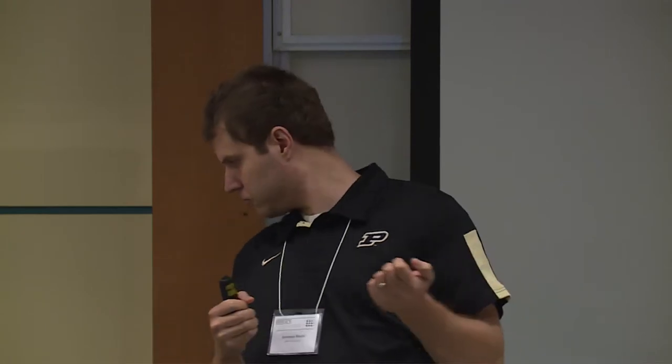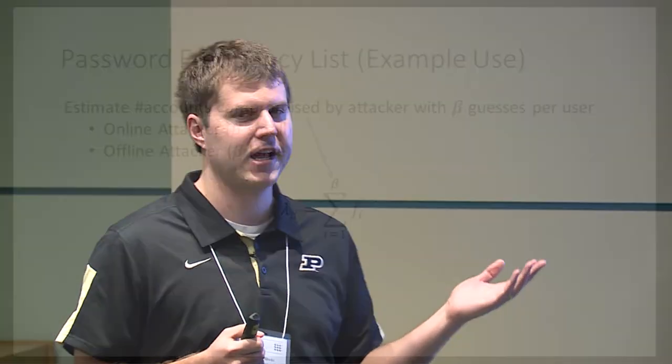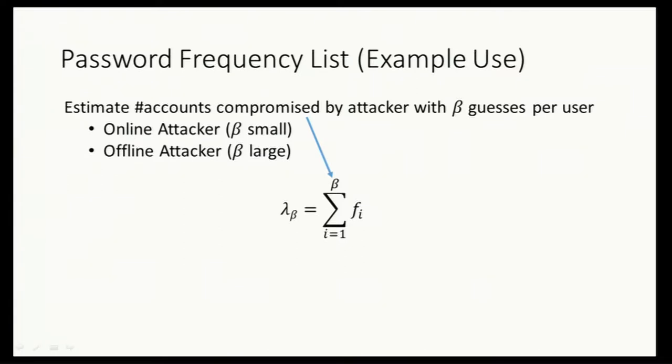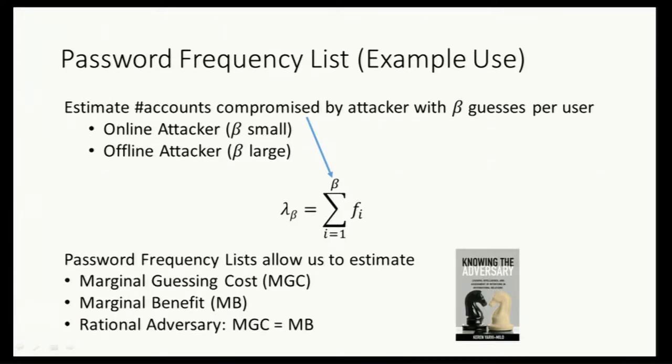Why would we want a password frequency list? A password frequency list can be tremendously valuable for security researchers. For example, I can define the statistic lambda-beta, which is simply the fraction of user accounts that would be broken by an attacker who can try beta guesses per user. When beta is small — say 10 — you can think of an online attacker repeatedly trying to log into your account. When beta is large, you can think of an offline attacker who has breached the authentication server and has access to the password hash.